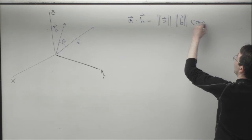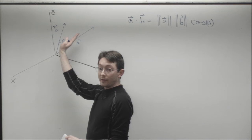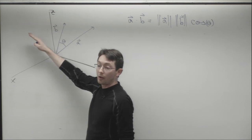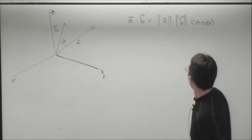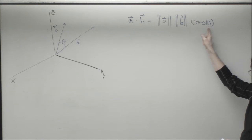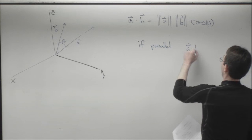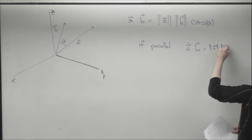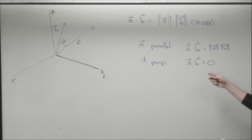If a and b are parallel, a dot b is just the length of a times the length of b. If they're perpendicular, the dot product is zero. This is a nice geometric interpretation: if a and b are orthogonal they have zero inner product; if they point in the same direction they have the maximal inner product. You can prove this formula using the law of cosines from trigonometry.